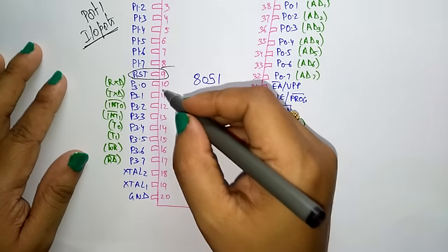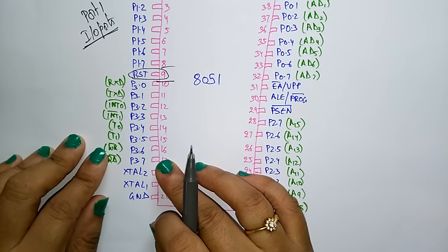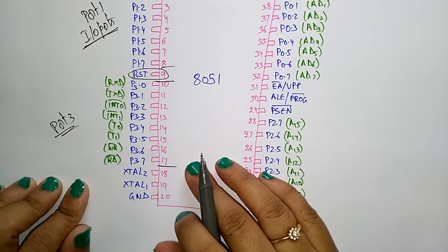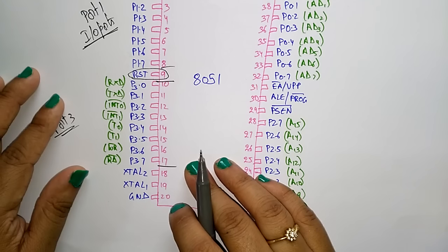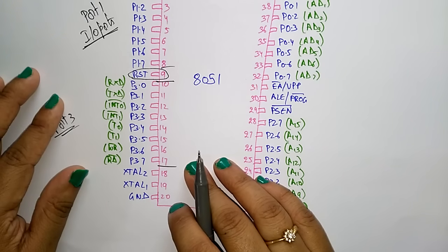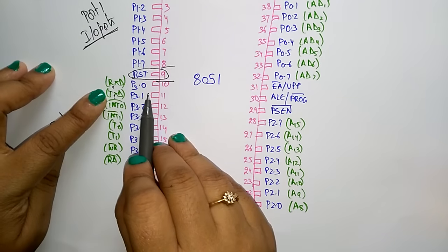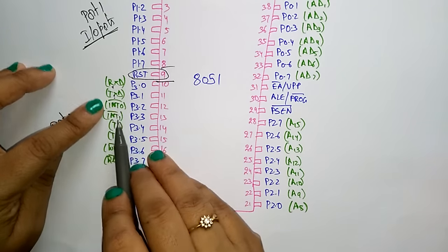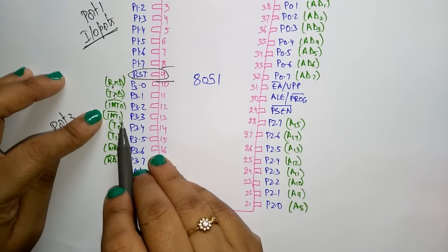Pins 10 to 17 form port 3. This port serves functions like interrupt, timer input, control signals and serial communication signals. P3.0 acts as receive data (RXD) and P3.1 as transmit data (TXD). There are also interrupt 0 and interrupt 1 signals accessible through this port.